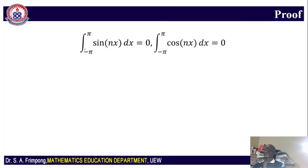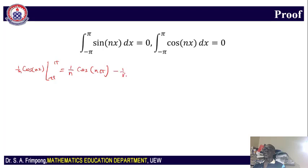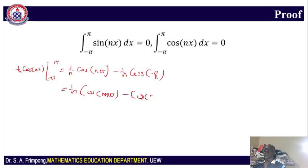To prove it: if you integrate sin(nx), the answer is negative (1/n)cos(nx), evaluated from negative π to π. Putting in π gives (1/n)cos(nπ), and putting in negative π gives minus (1/n)cos(negative nπ). Since cosine is even, cos(negative nπ) = cos(nπ), so we get (1/n)cos(nπ) minus (1/n)cos(nπ), which equals 0. Similarly, integrating cos(nx) gives (1/n)sin(nx). Since sin(nπ) = 0 for any integer n, evaluating at both limits gives 0.